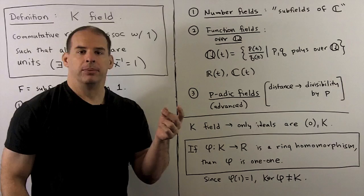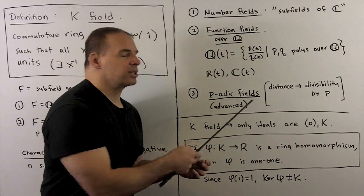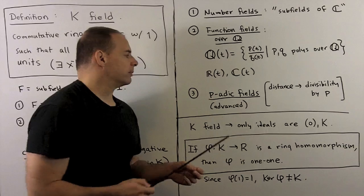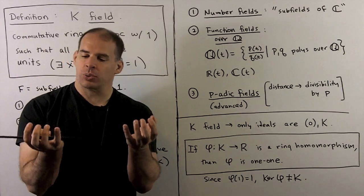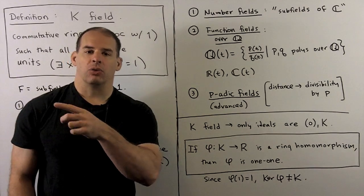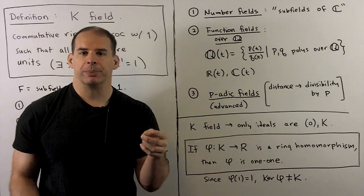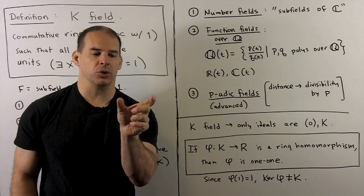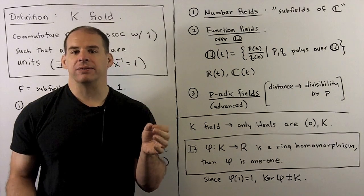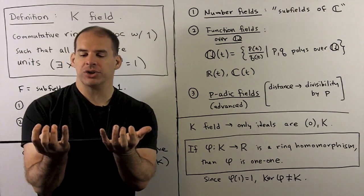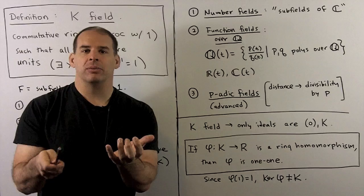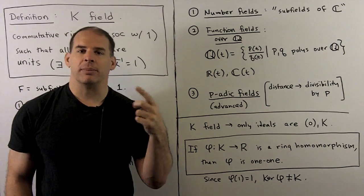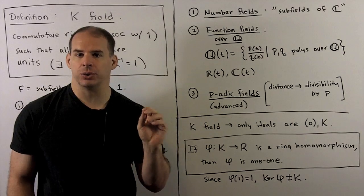For another type of field — this type is advanced, so we won't say much about it here — we have p-adic fields. P-adic fields are worth mentioning. If we take the rationals sitting inside the real numbers, we have a notion of distance given by measurement. For the p-adic fields, we start with the rationals and measure length by considering divisibility by a prime. That makes for a very different kind of field requiring a different intuition.